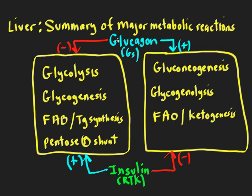Glucagon and insulin are the major hormones working in opposite ways. The reactions that glucagon turns on on the right side are also turned off by insulin, and insulin turns on the reactions on the left. This is a very important general summary of the major metabolic reactions and how they're regulated by glucagon and insulin.